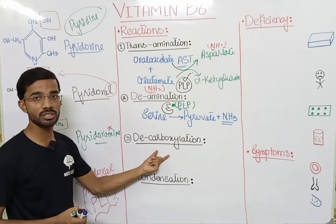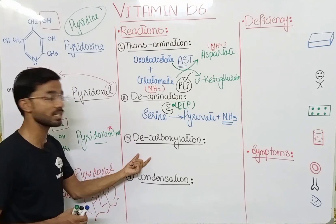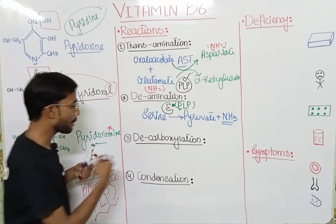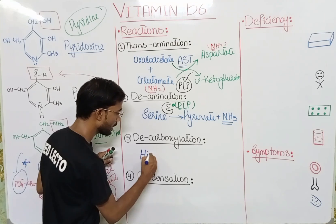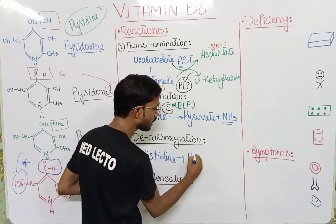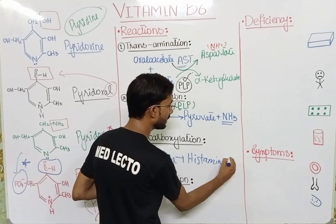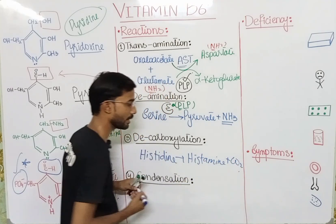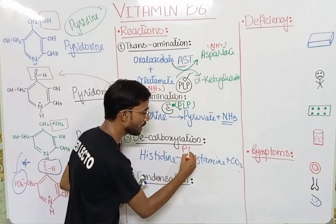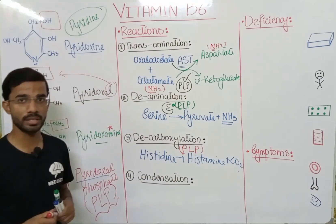Next is decarboxylation — removal of carbon dioxide. In this example, histidine will convert into histamine with the release of carbon dioxide. Again, Pyridoxal phosphate will act as a coenzyme.